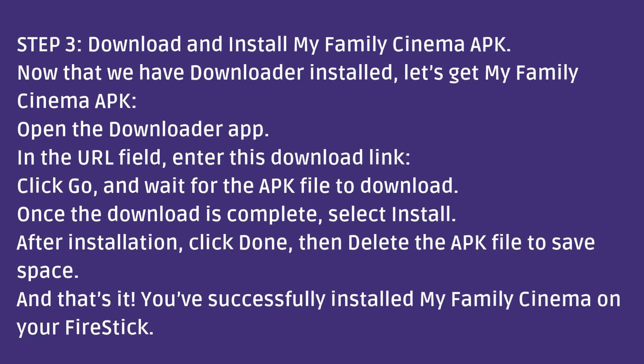Step 3: Download and install the My Family Cinema APK. Now that we have Downloader installed, let's get the My Family Cinema APK. Open the Downloader app, and in the URL field, enter the download link. Click Go and wait for the APK file to download. Once the download is complete, select Install. After installation, click Done, then delete the APK file to save space.